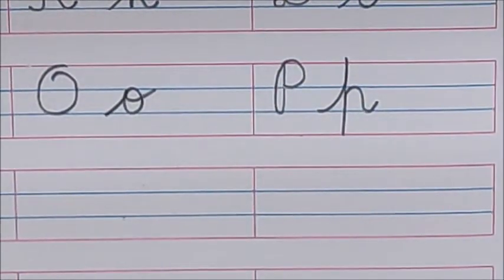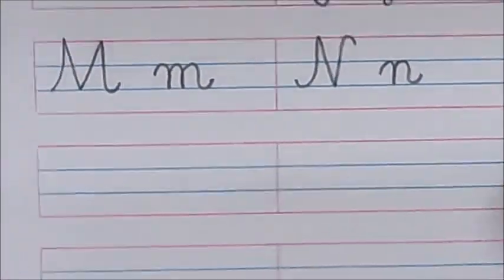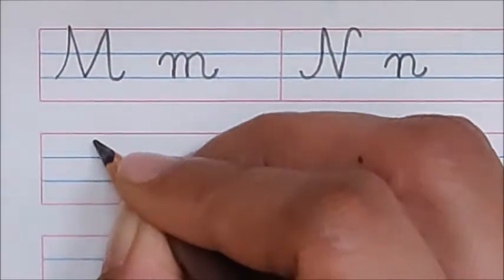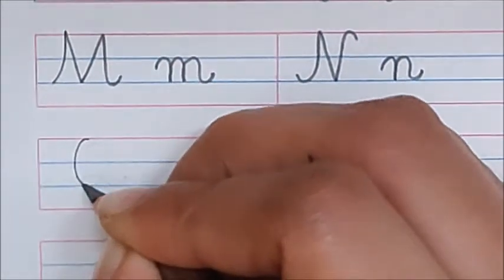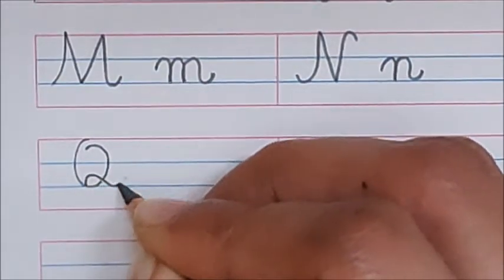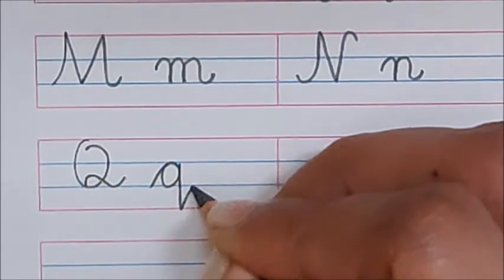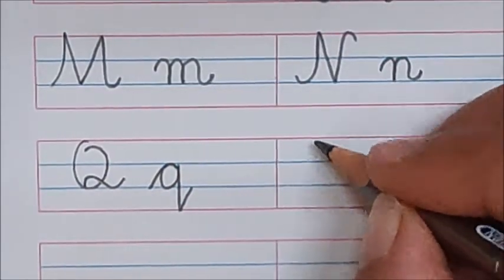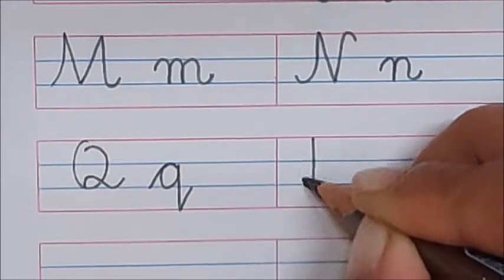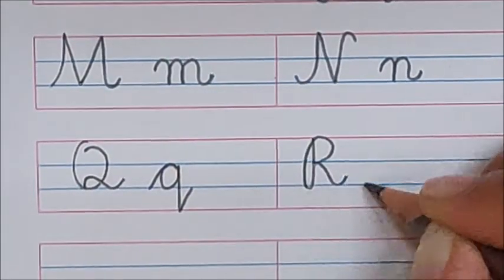What comes after P? Q. Go to the next row. And here, we will write down Q. How to write Q? Make a round. Just like O. Don't close it. Now, make a tail. Q. Next, R. Standing line, loop behind, one round, and kick. R.